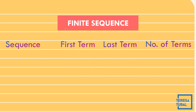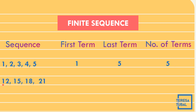Let us see examples of the finite sequence, identifying the first term, the last term, and the number of terms. First example: 1, 2, 3, 4, and 5. First term is 1, last term is 5, and the number of terms is 5. Second example: 12, 15, 18, and 21. First term is 12, last term is 21, and the number of terms is 4.